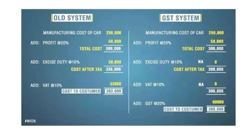Let's look at another example with a car — this was the old system where sales tax was used. The manufacturing cost of the car is two lakh fifty thousand, and the dealer adds a margin of fifty thousand, so the cost becomes three lakh. On this, excise duty of 10% is added — 10% of three lakh is thirty thousand — so the cost after taxes is three lakh thirty thousand. When selling to the consumer, value added tax at 10% is also added: 10% of three lakh thirty thousand is thirty three thousand, so the total cost to the consumer is three lakh sixty three thousand. This 10% VAT is charged not just on the base amount but on the figure that already includes the 10% excise duty — so it is a tax on tax, and that is the cascading effect.